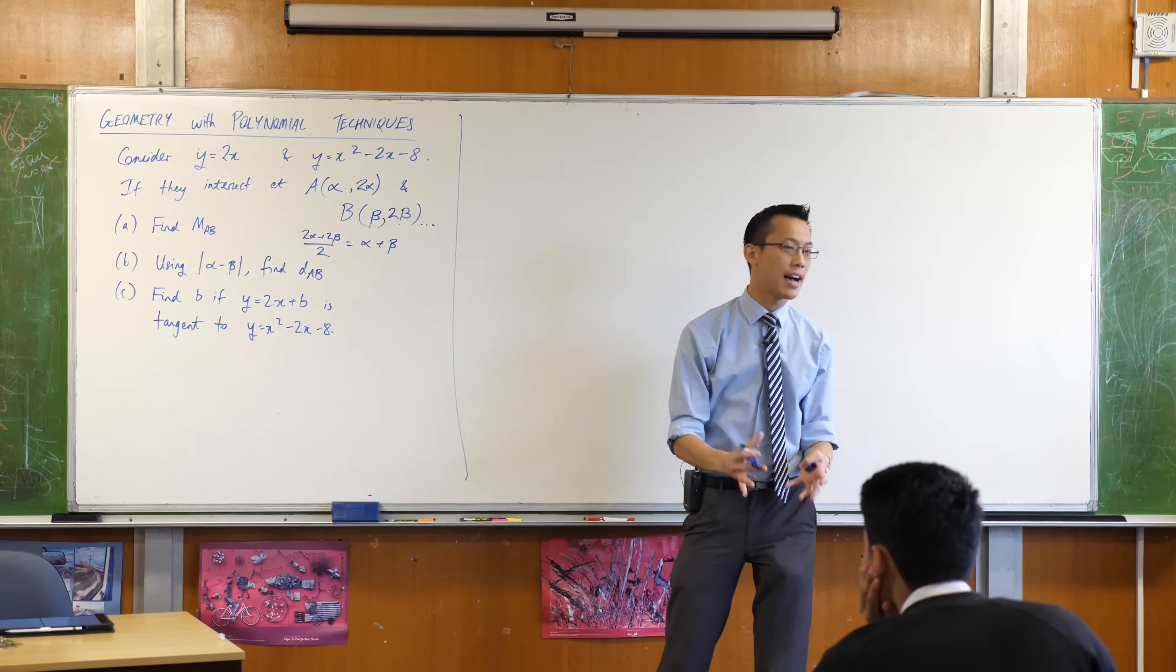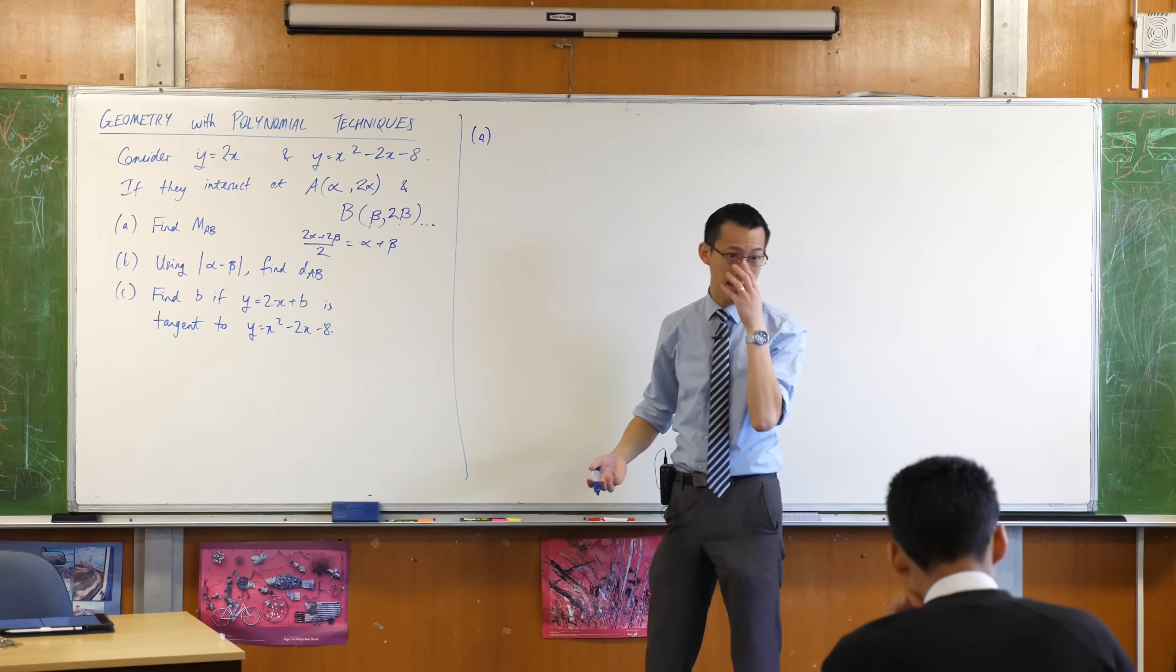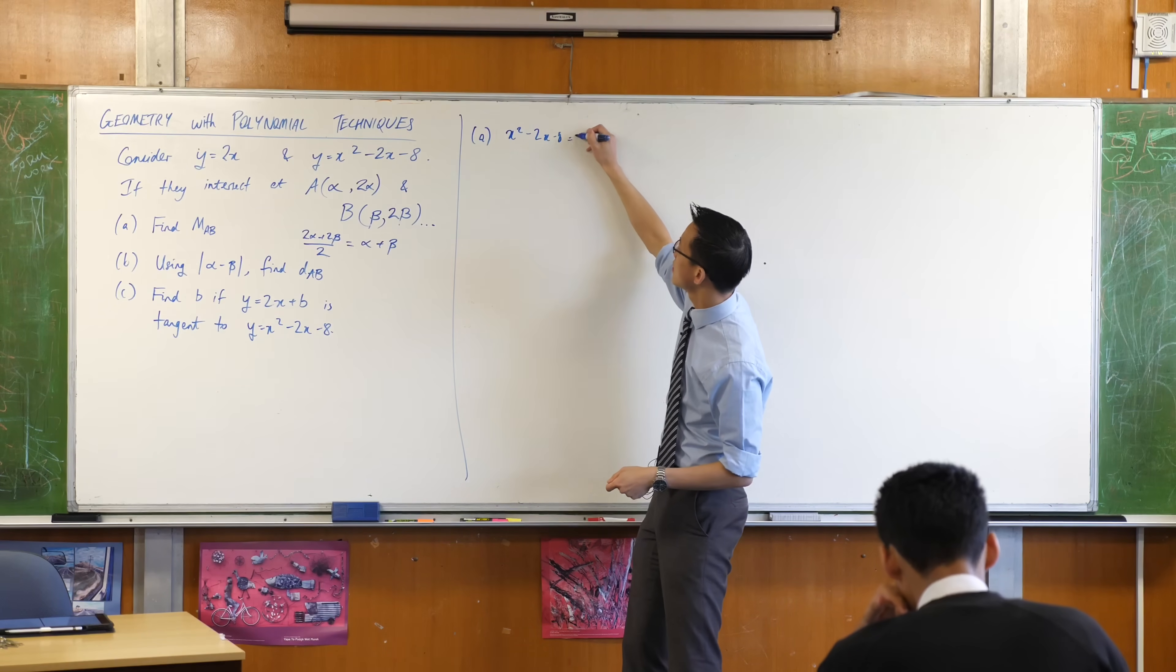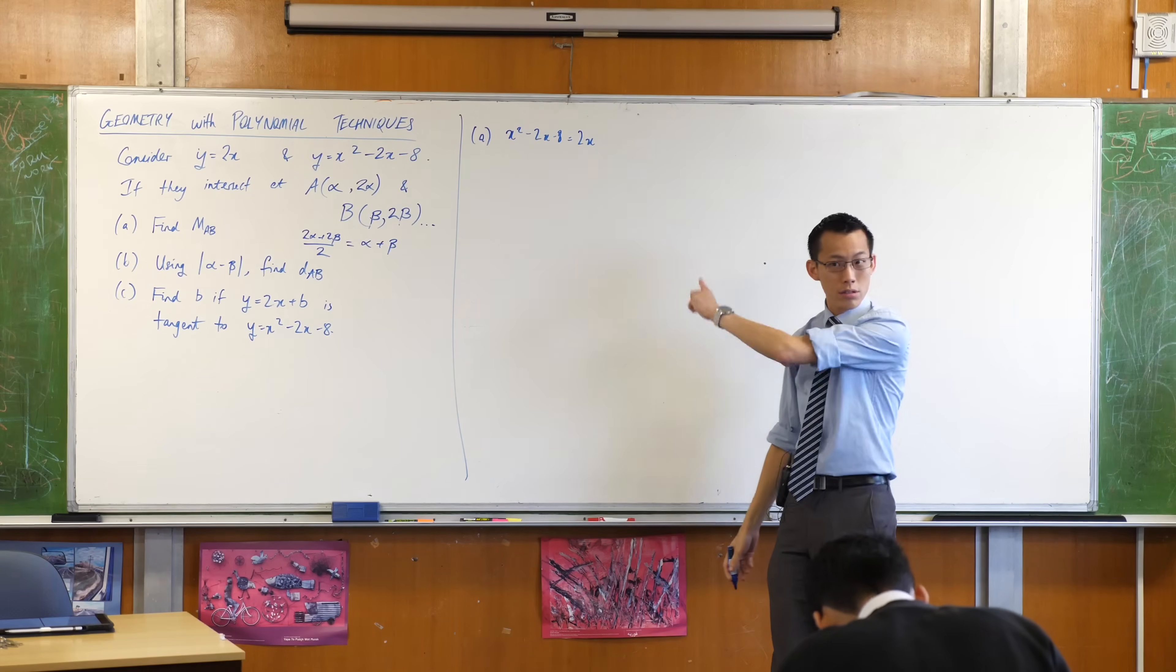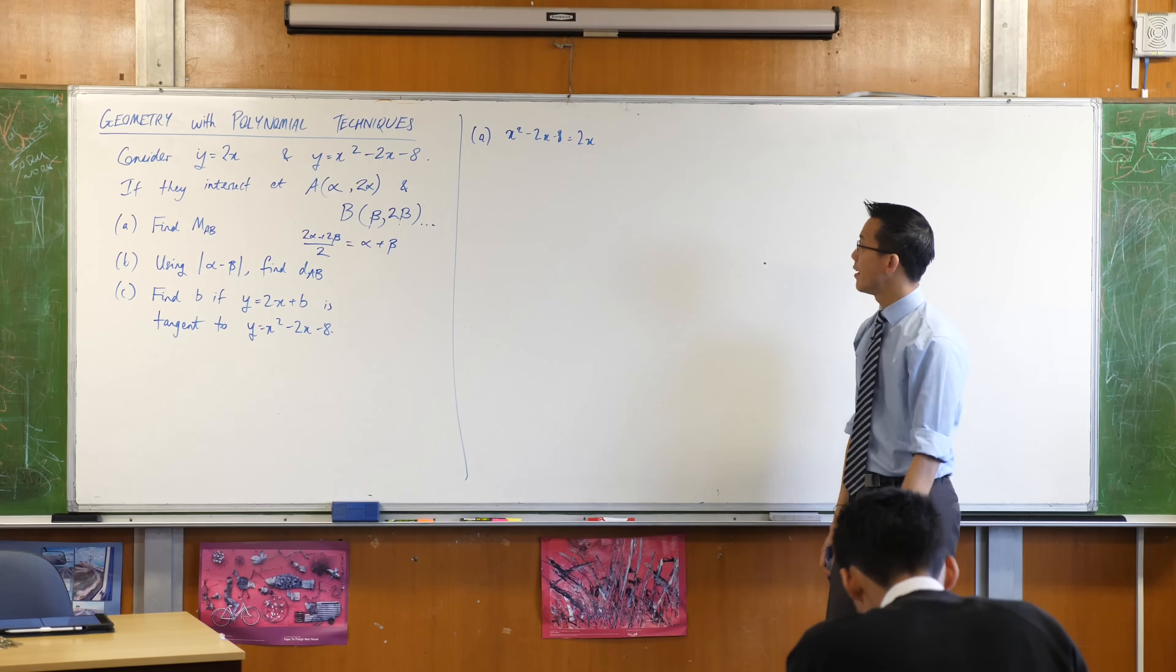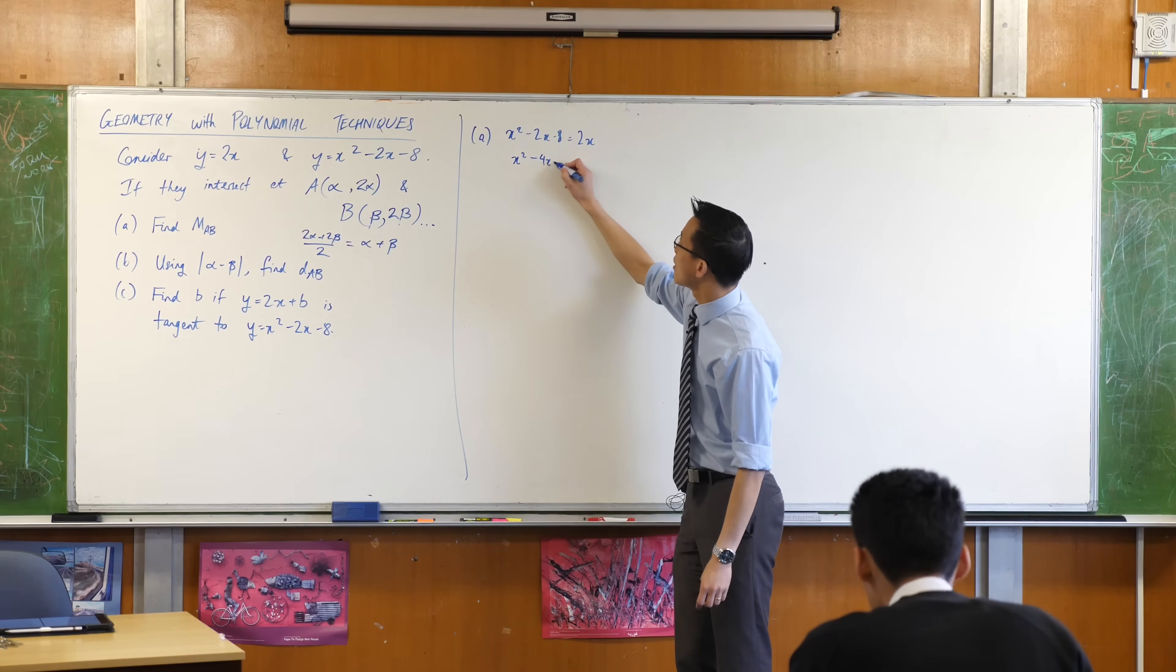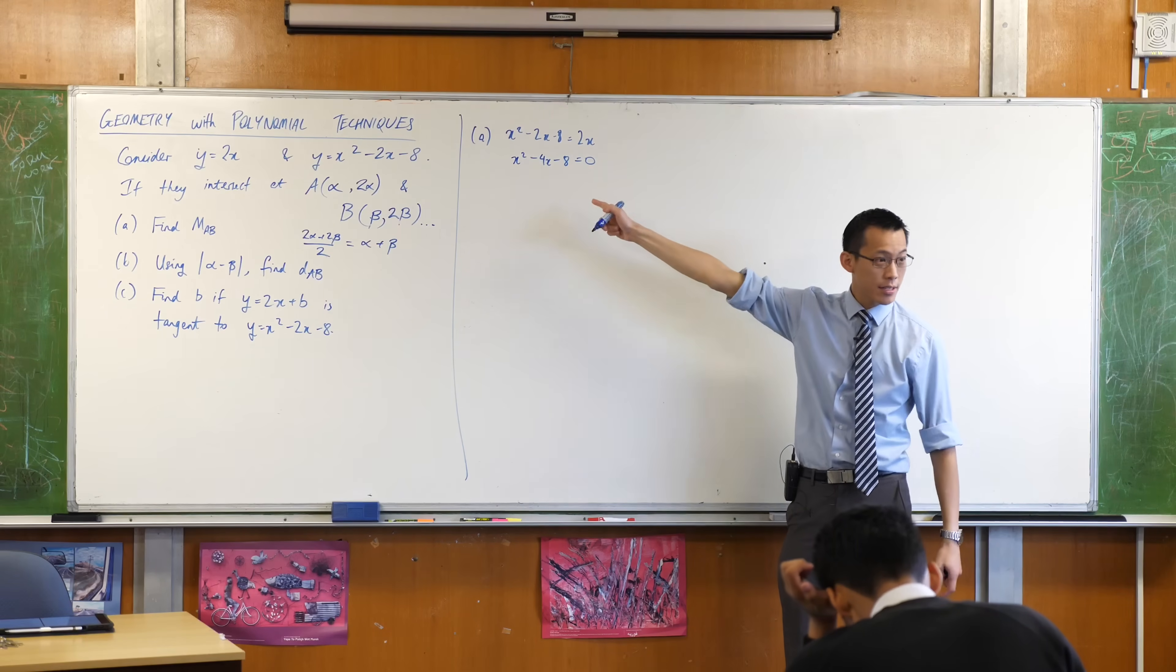Now we've got an idea of how we're going to go through this question. Let's start to solve the thing. This is part A - you told me to start solving this thing simultaneously, so I get x² - 2x - 8 = 2x. The solutions of this thing are alpha and beta. Let's tidy this up a little bit.